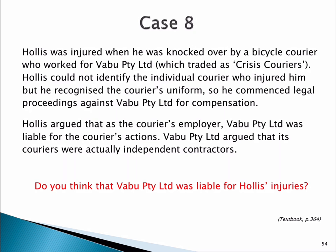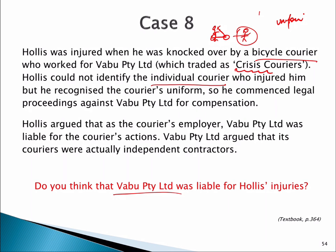The case to remember around vicarious liability is Hollis and Vaboo Limited. We have a bicycle courier scooting down the road on their bike who happens to run into someone walking along the street. The injured person never caught the cyclist but did recognise the uniform, knowing it was someone who worked for Crisis Couriers. They commenced legal action against the company that operated under that name, Vaboo Proprietary Limited.